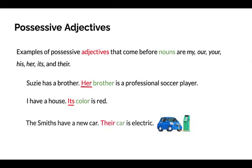The Smiths have a new car. Their car is electric. The possessive adjective in this example is their. We see that their refers to the Smiths and that the electric car belongs to the Smiths.